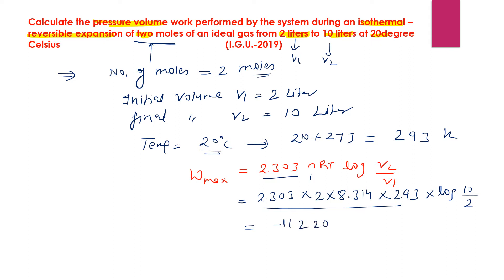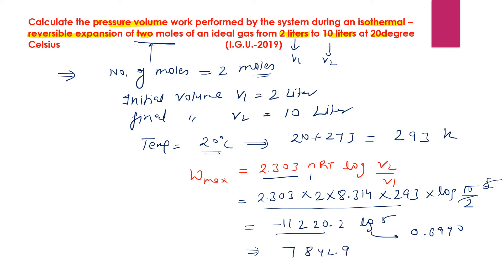We get 11220.2 × log(5). The value of log 5 is approximately 0.6990. Multiplying 11220.2 × 0.6990 gives 7842.9 joules. Converting to kilojoules, the work done is 7.84 kJ — this is the work done for isothermal reversible expansion.